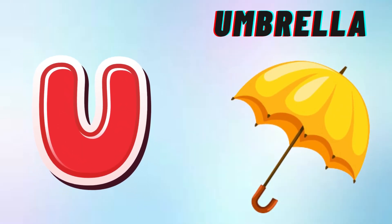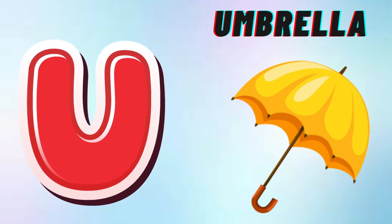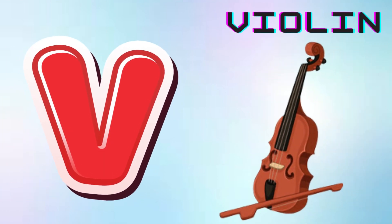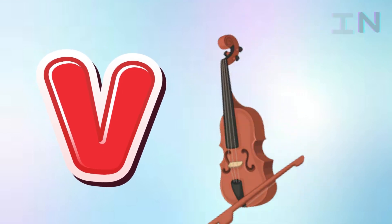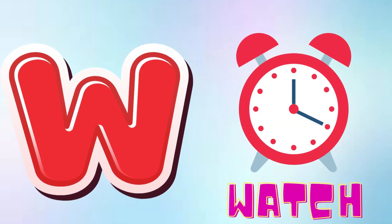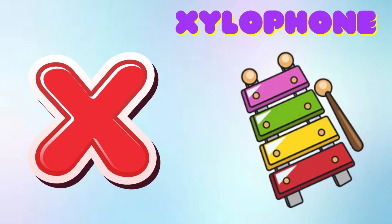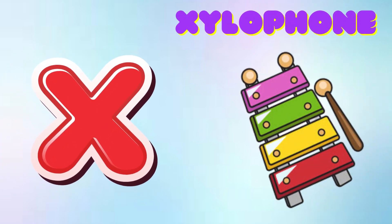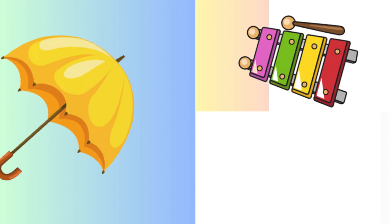U is for Umbrella, U-U-Umbrella. V is for Violin, V-V-Violin. W is for Watch, W-W-Watch. X is for Xylophone, X-X-Xylophone.